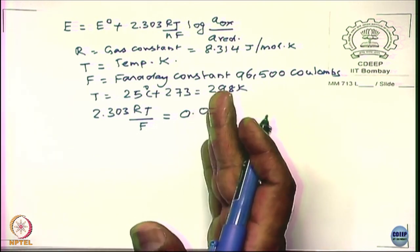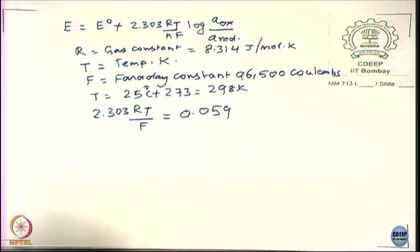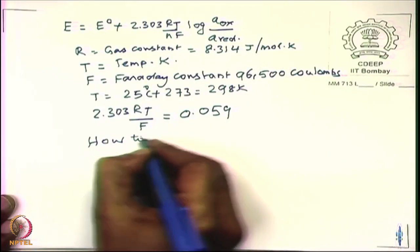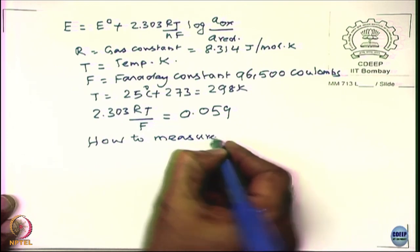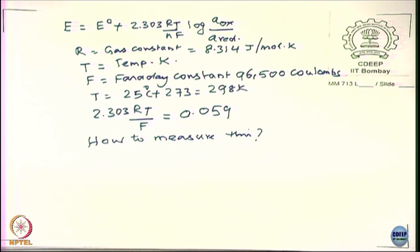Using this, you should be in a position to calculate the equilibrium potential for any electrochemical system — be it Fe²⁺ in equilibrium with Fe³⁺, or zinc in equilibrium with Zn²⁺ ions. No matter what the equilibrium is, you should be able to determine the equilibrium potential. But is this a measurable quantity, or can it only be calculated? We should be able to measure it.